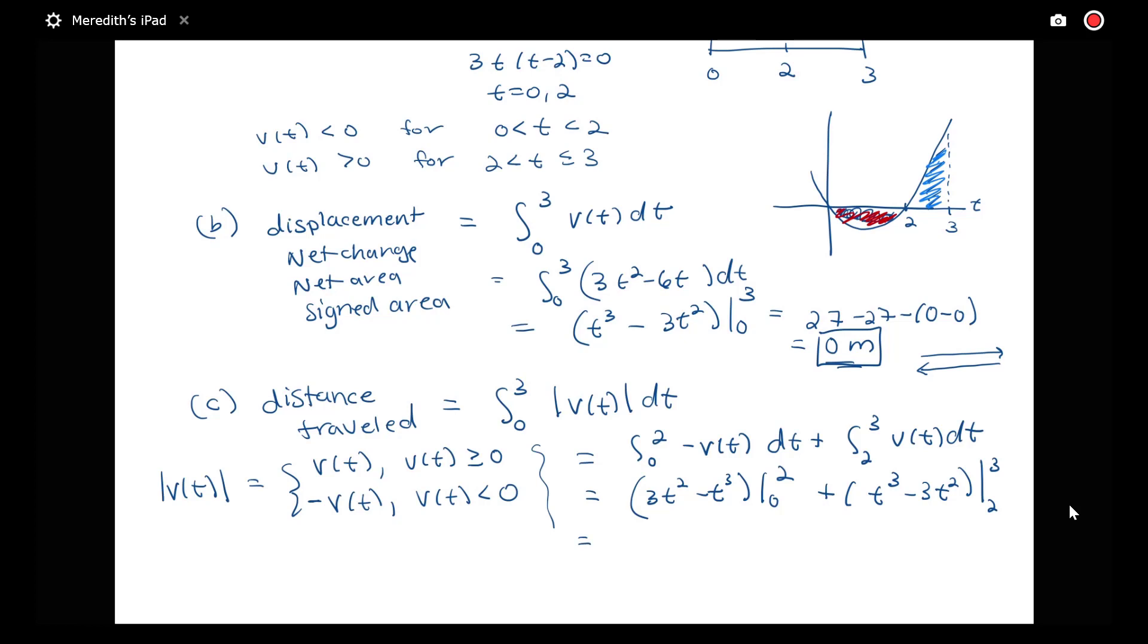Doing the arithmetic: this is 12 - 8 - 0, plus (27 - 27) - (8 - 12). So we end up with 4 plus 4. We get a total distance traveled of 8 meters.